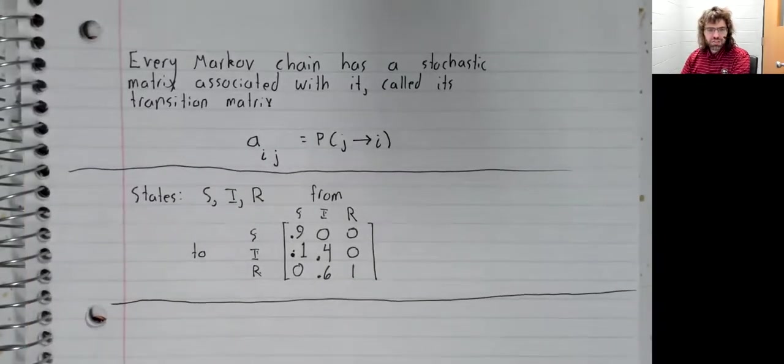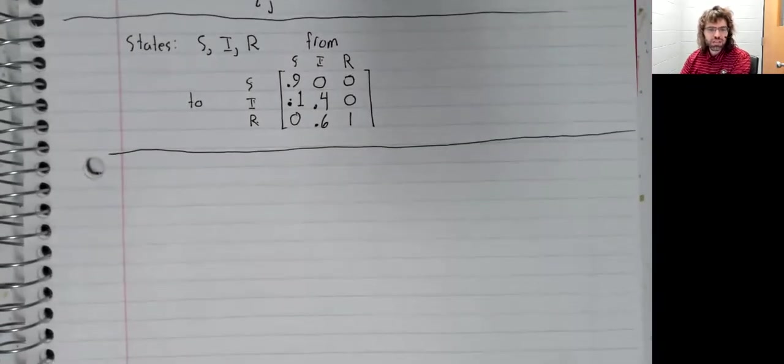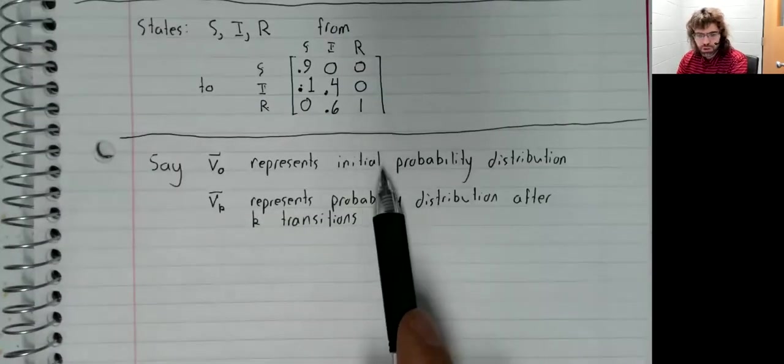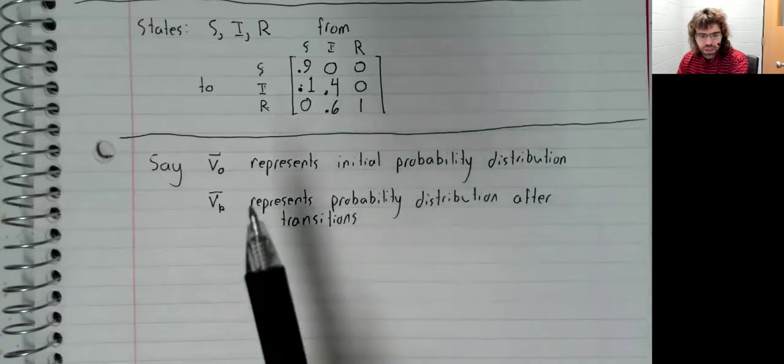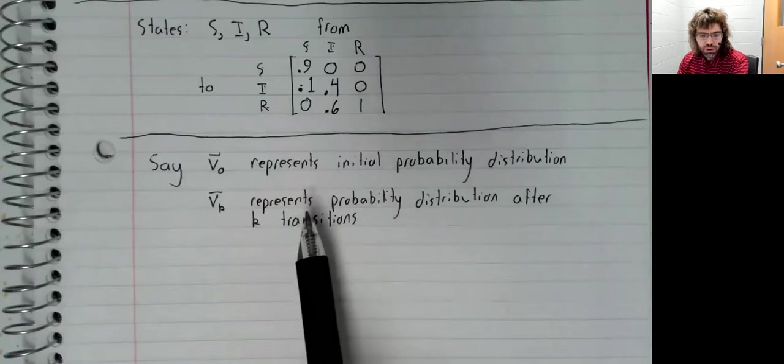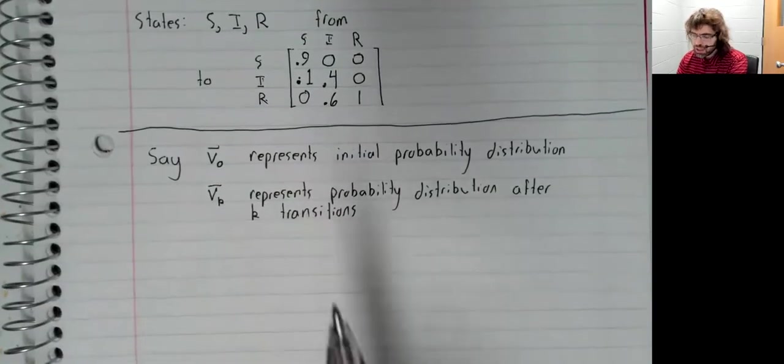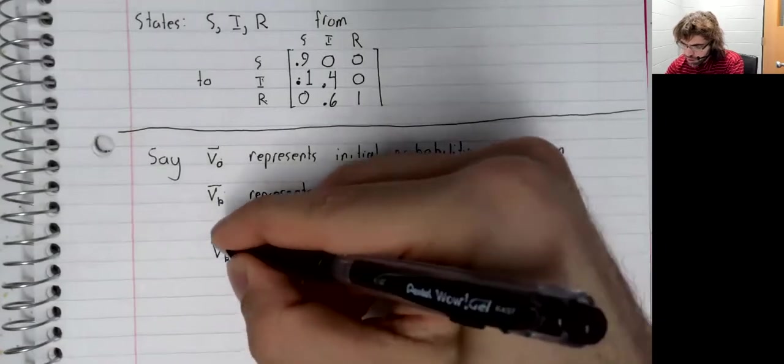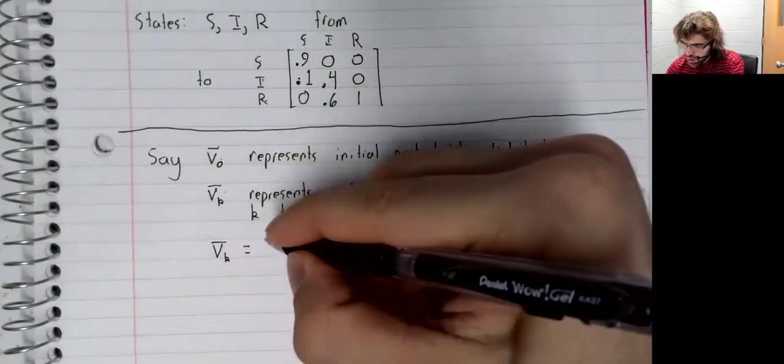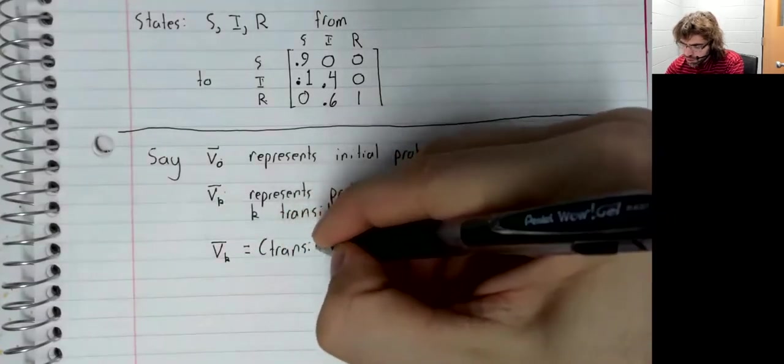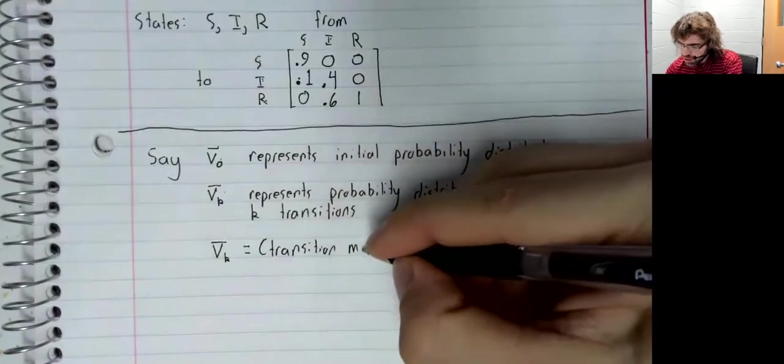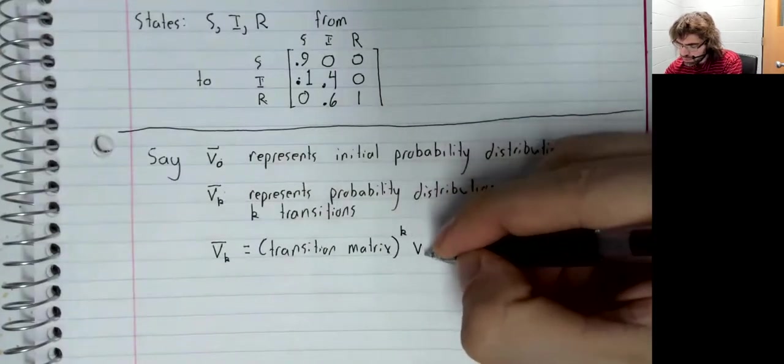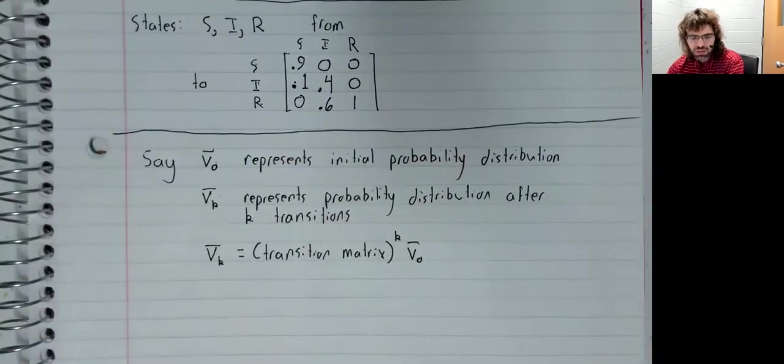We've already seen how these transition matrices can be used. Say that we have an initial probability distribution and the probability distribution after k transitions. These vectors are related to one another by v_k equals the transition matrix to the power of k times v_0.